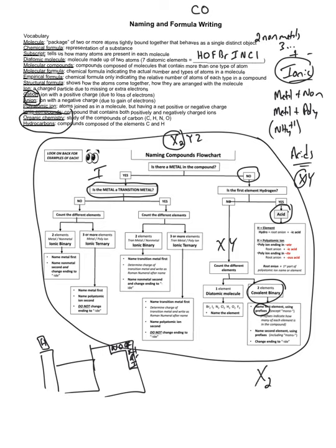So if you have a formula X2Y3, this would be diX triY. The first element, we do not change its ending — so if the element were sulfur, we would say disulfur. If the second compound was oxygen, we'd say disulfur trioxide. The last element always ends in '-ide.' We don't use the prefix mono for the first element — so CO2, we don't say monocarbon dioxide, we say carbon dioxide.